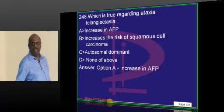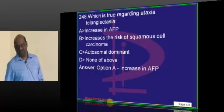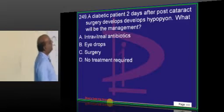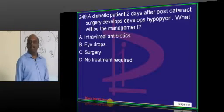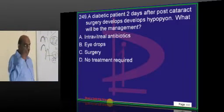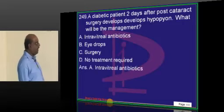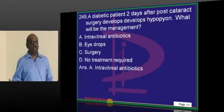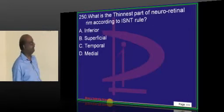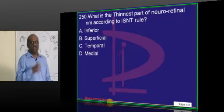Ataxia telangiectasia is one of the conditions where AFP levels are increased. A diabetic who had post-cataract surgery and developed hypopyon — one indication for intravitreal antibiotics.